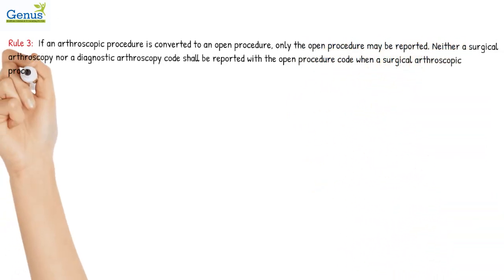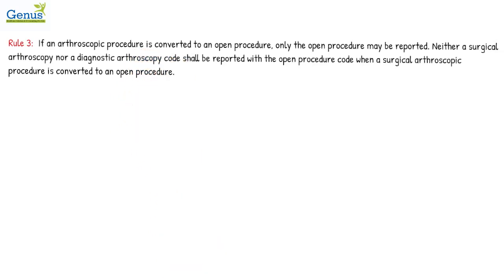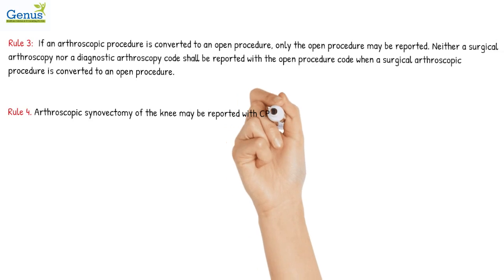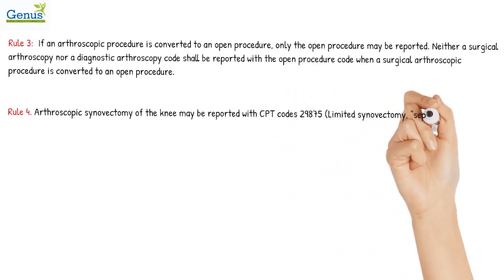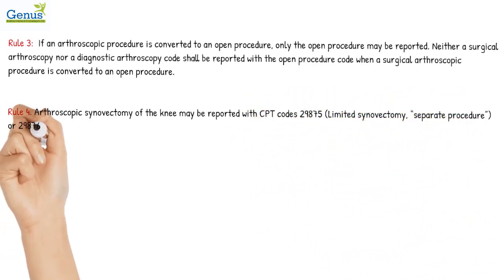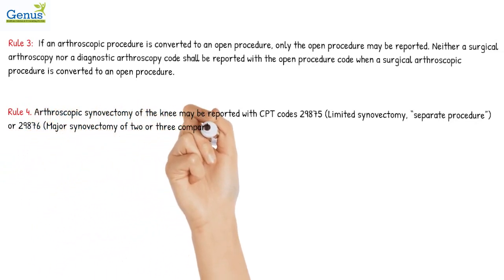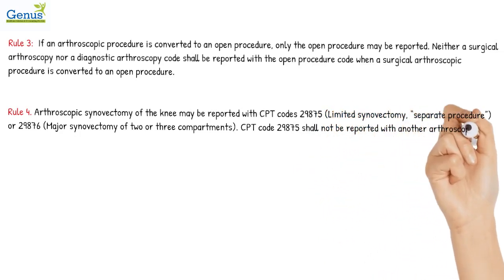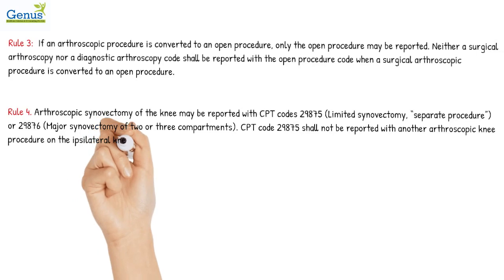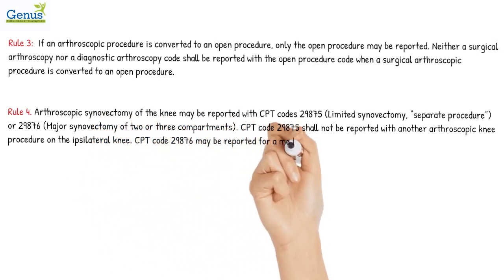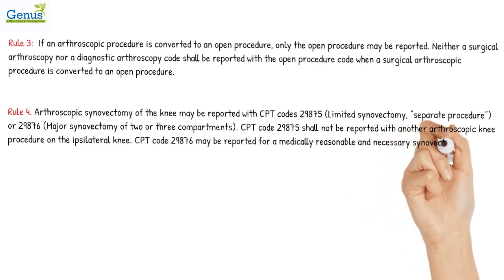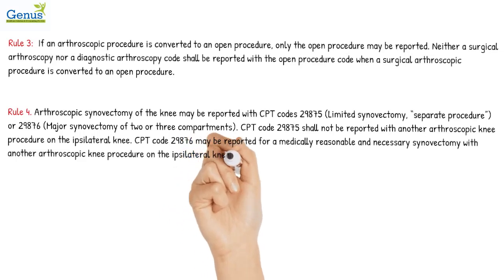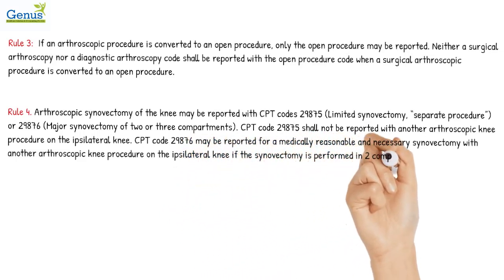Rule 4: Arthroscopic synovectomy of the knee may be reported with CPT code 29875 (limited synovectomy, separate procedure) or CPT code 29876 (major synovectomy of two or three compartments). CPT code 29875 shall not be reported with another arthroscopic knee procedure on the ipsilateral knee. CPT code 29876 may be reported for a medically reasonable and necessary synovectomy with another arthroscopic knee procedure on the ipsilateral knee, if the synovectomy is performed in two compartments on which another arthroscopic procedure is not performed.